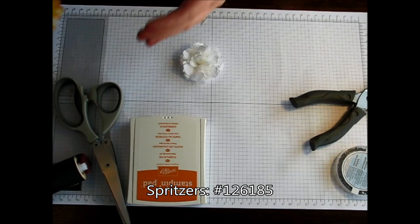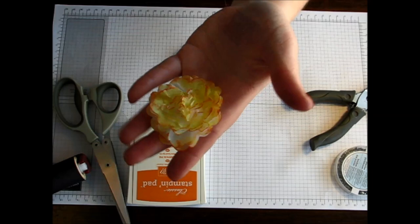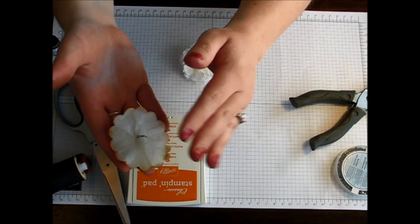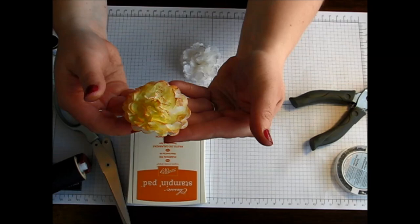This flower here I spritzed in yellow. Then I used my sponge dauber and got those little orange tips. Isn't that fabulous? I kind of like how it's still a little white and some of that white peeks through.